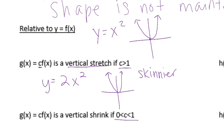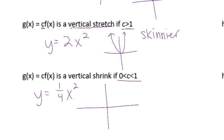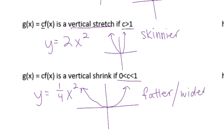Now let's look at if c is between 0 and 1 — for example y equals one-fourth x squared. This is where you have a fraction or decimal smaller than 1 but bigger than 0. We're not thinking about negatives because a negative will do a reflection. This one is going to be a vertical shrink. Think of someone who is tall and squeezed down, like a can of Coke you step on — it gets smaller but a little fatter, wider. So the graph is going to be fatter or wider.